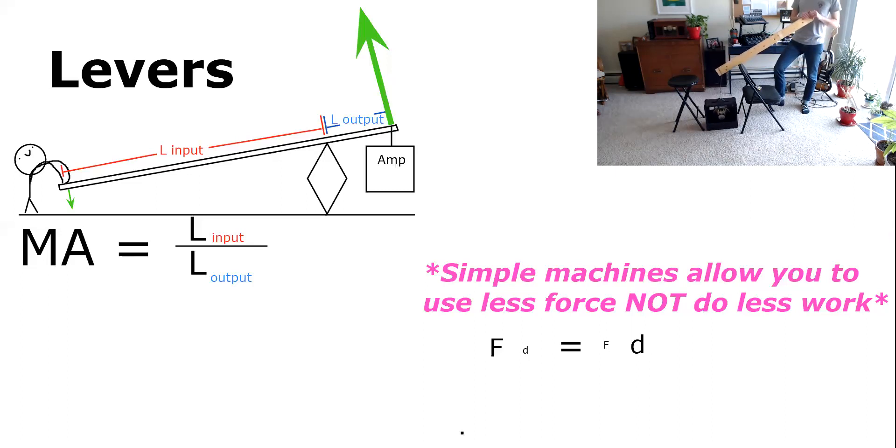In both cases the amount of work is the same. I am doing the same amount of work on my end as the lever is doing work on the other end. What's different is I'm applying a smaller force over a greater distance where the lever is applying a greater force over a smaller distance. This is because energy has to be conserved.